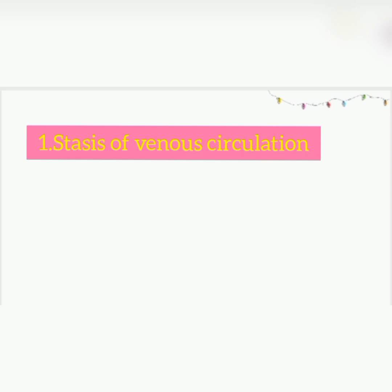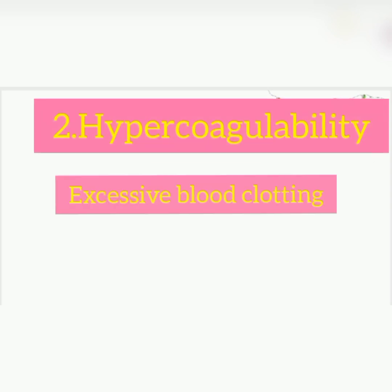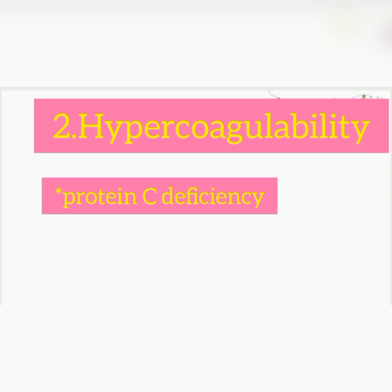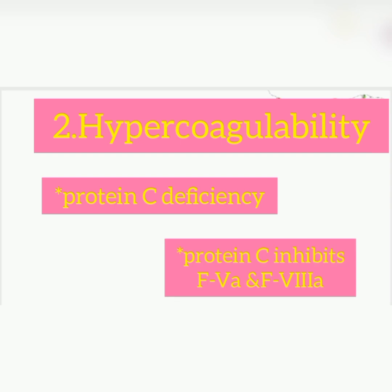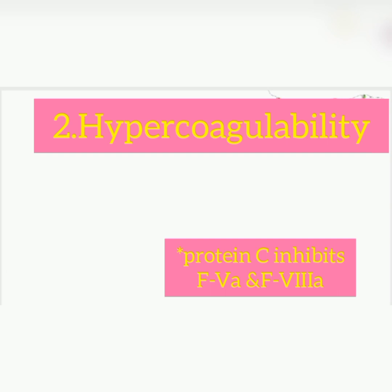Another factor that contributes to deep vein thrombosis is hypercoagulability, which means excessive blood clotting. One condition that can lead to a hypercoagulable state is protein C deficiency. As you know, the liver is the site for synthesis of clotting factors such as factor two, seven, nine, and ten; it's also the site for synthesis of protein C and protein S. The main function of protein C is to inhibit activated factor five and activated factor eight. So if protein C is deficient, we are unable to inhibit these factors, which can lead to thrombosis formation.